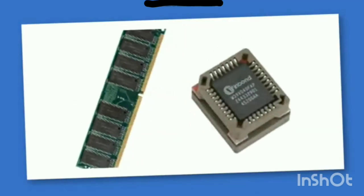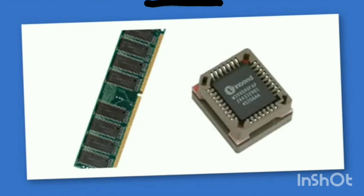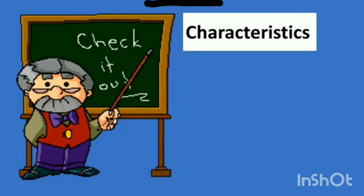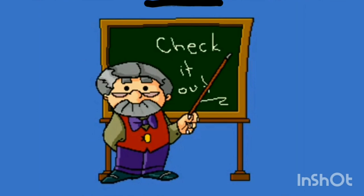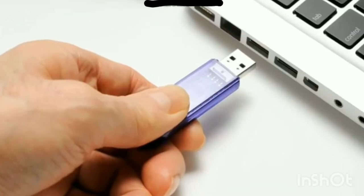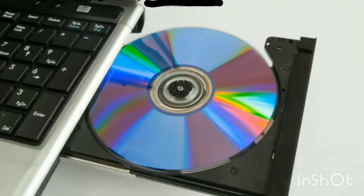Primary memory is stored in Random Access Memory — you can have a look at how it looks in the given picture, so you can easily recognize what type of primary memory it is. Secondary memory has some special characteristics which we will discuss one by one. Both primary and secondary memory are important and you must be well-informed about them. Shown here are a floppy disk, a hard disk, a pen drive, a CD, and a microprocessor chip.